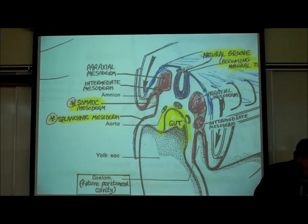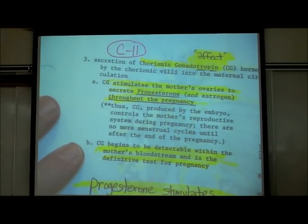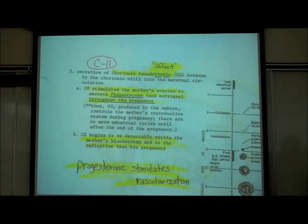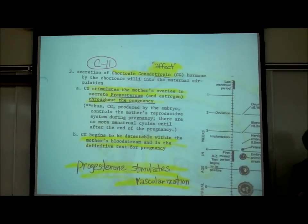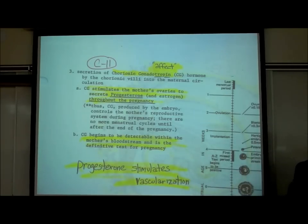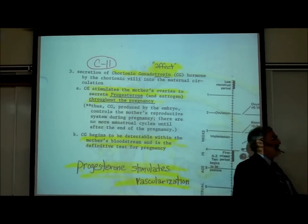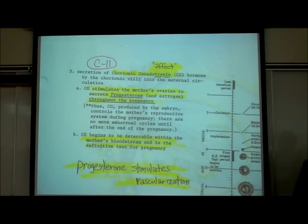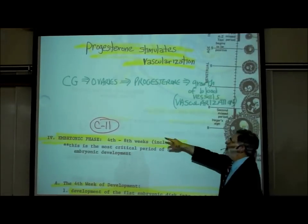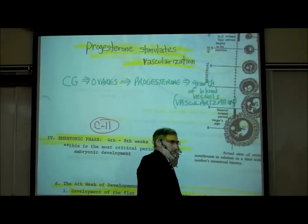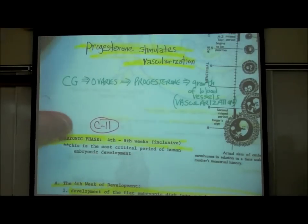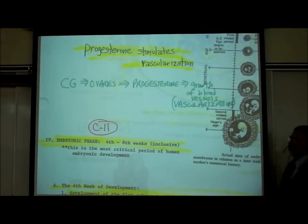One more important thing happens during the third week, on page C11. The hormone chorionic gonadotropin starts to be secreted from the chorionic villi into the mother's bloodstream. This hormone is what they test for on a pregnancy test — it's produced by the outer sac around a baby. The only time a woman would have this hormone in her bloodstream or urine is if there's a baby making it. Chorionic gonadotropin affects the ovaries of the mother, causing them to secrete progesterone for the duration of the pregnancy.